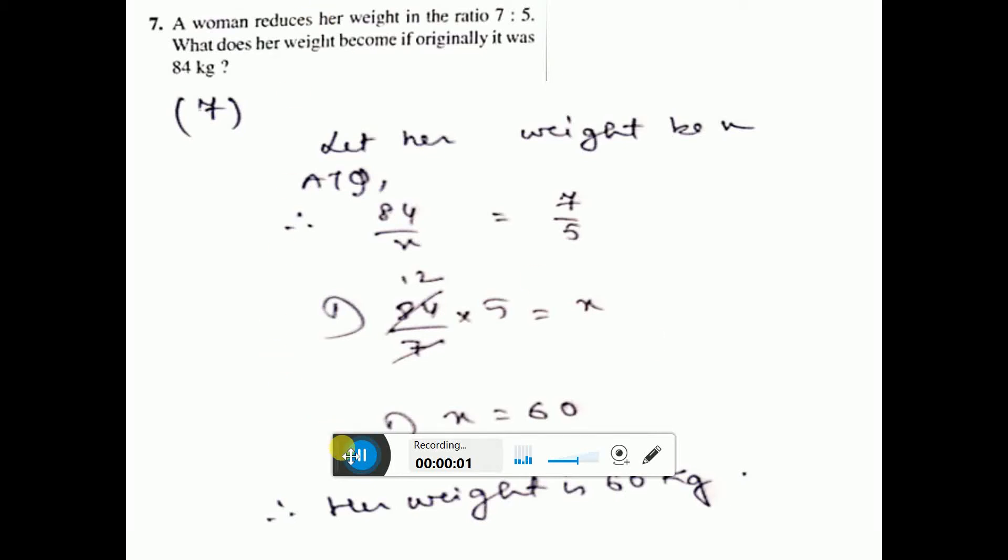A woman reduces her weight in the ratio 7 is to 5. That means before the ratio was 7 and now the ratio is 5. This is before, I am writing here before and this is present.